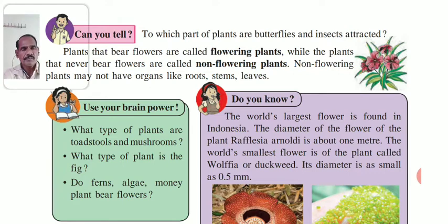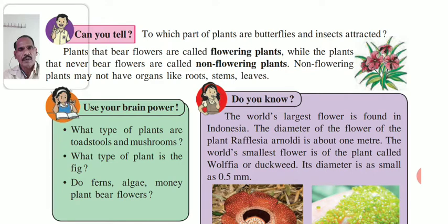The plants that bear flowers are called flowering plants. The plants that never bear flowers are called non-flowering plants.